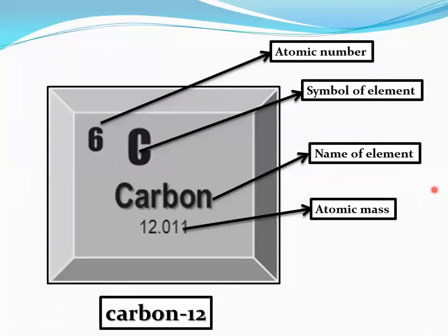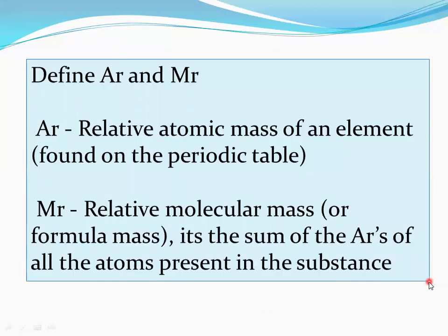Observe this diagram. Carbon: atomic number 6, symbol C, name carbon, atomic mass 12. We define relative atomic mass and relative molecular mass. Relative atomic mass is the mass of an element found on the periodic table. Relative molecular mass, or formula mass, is the sum of the relative masses of all the atoms present in a substance.